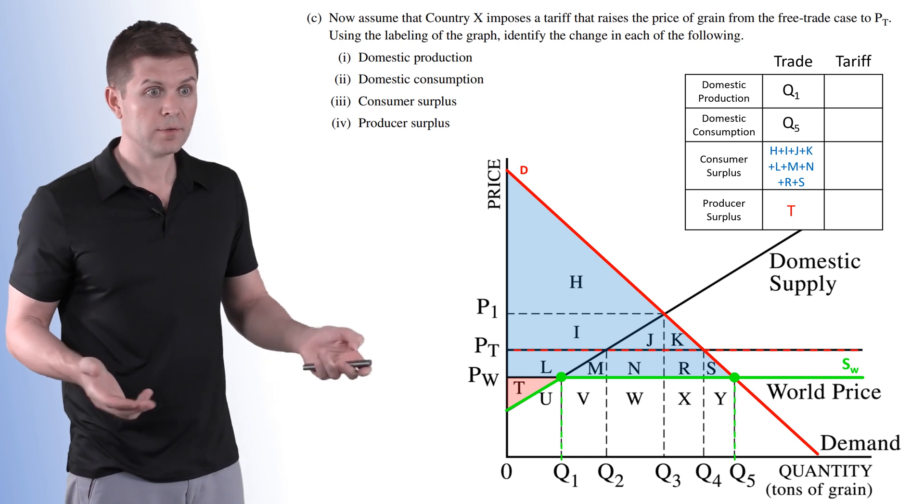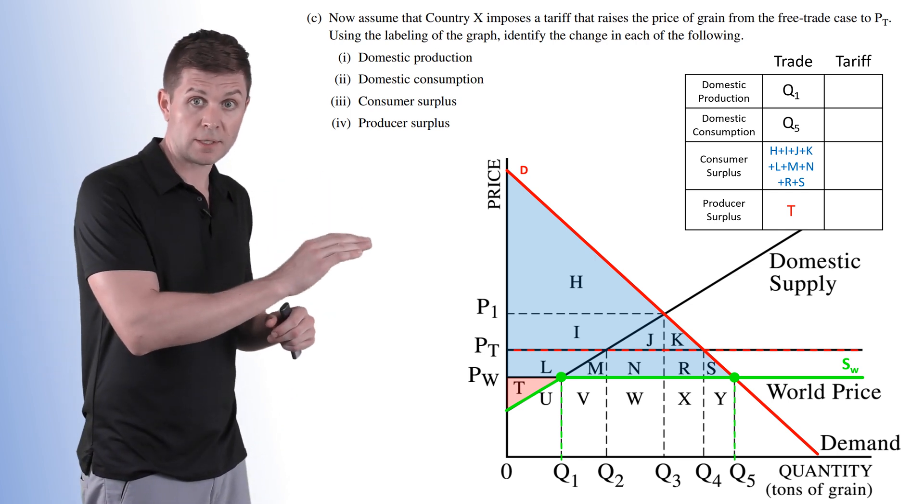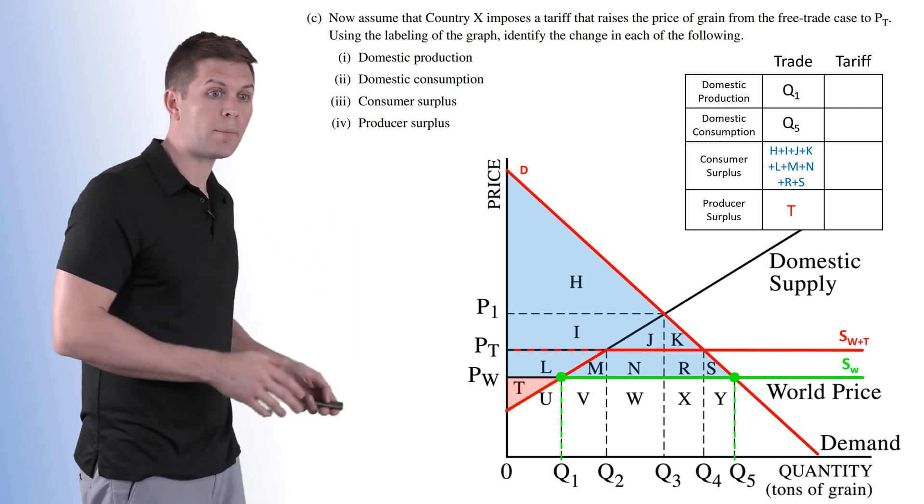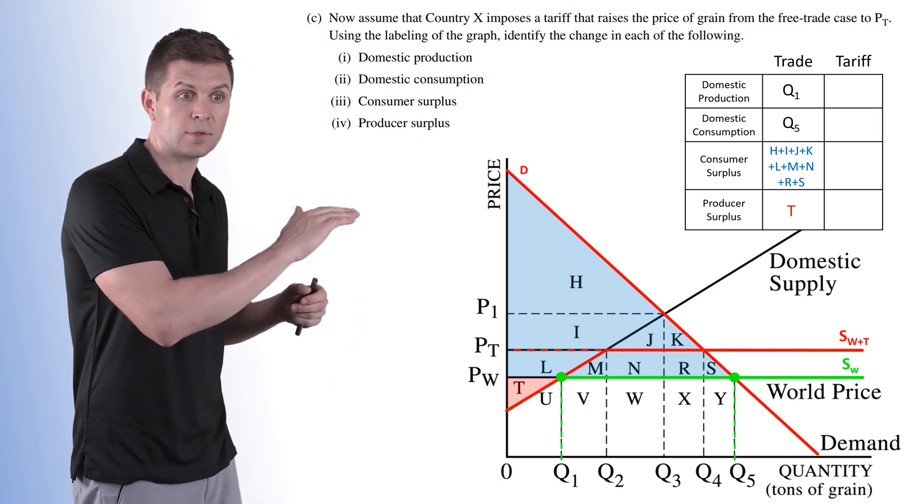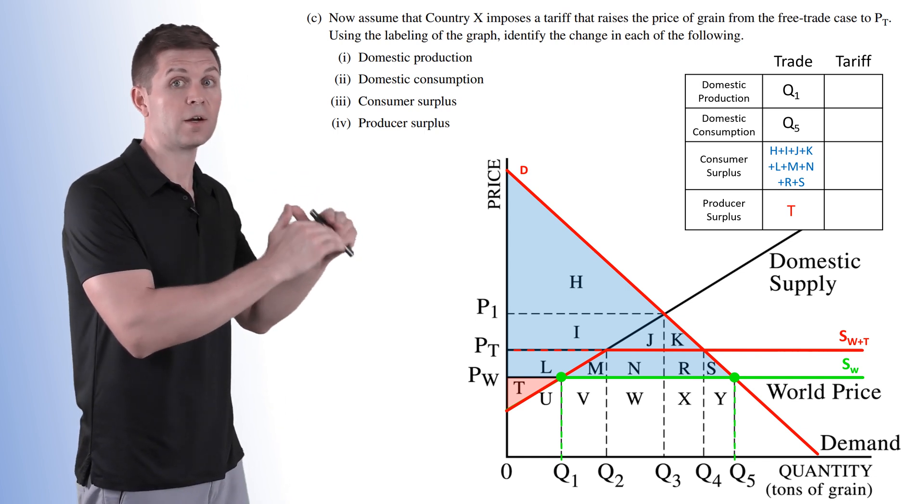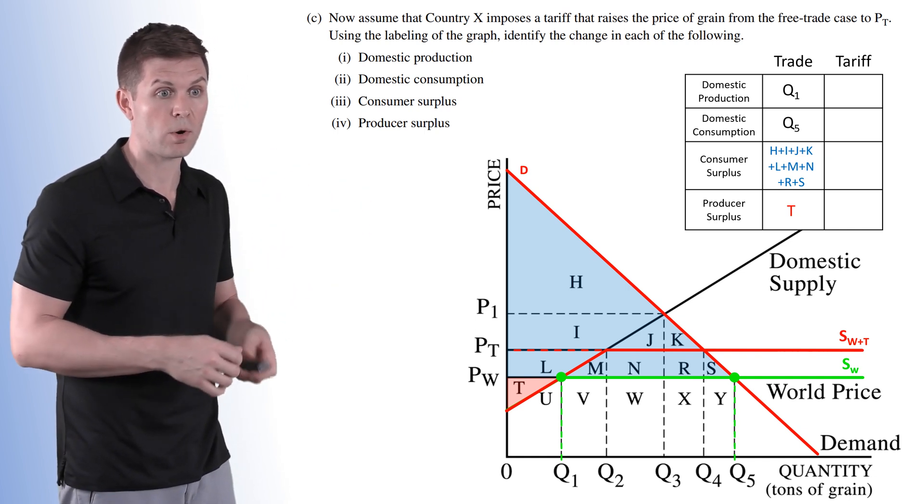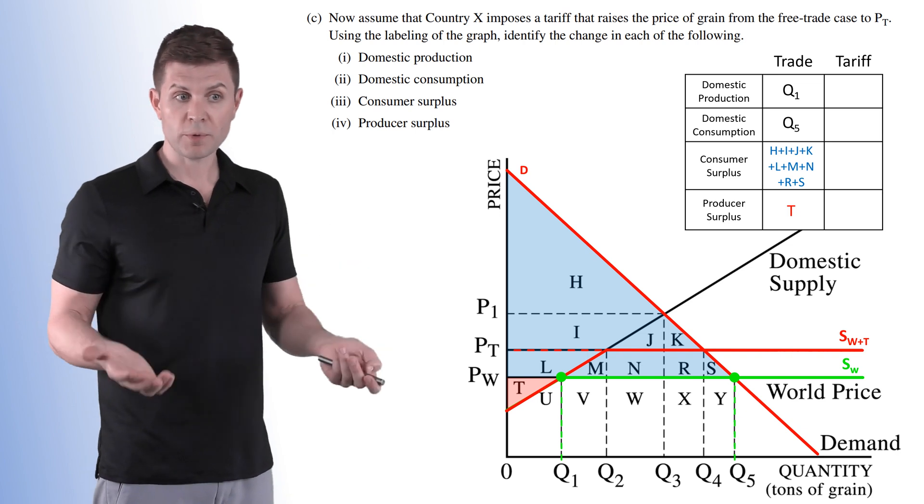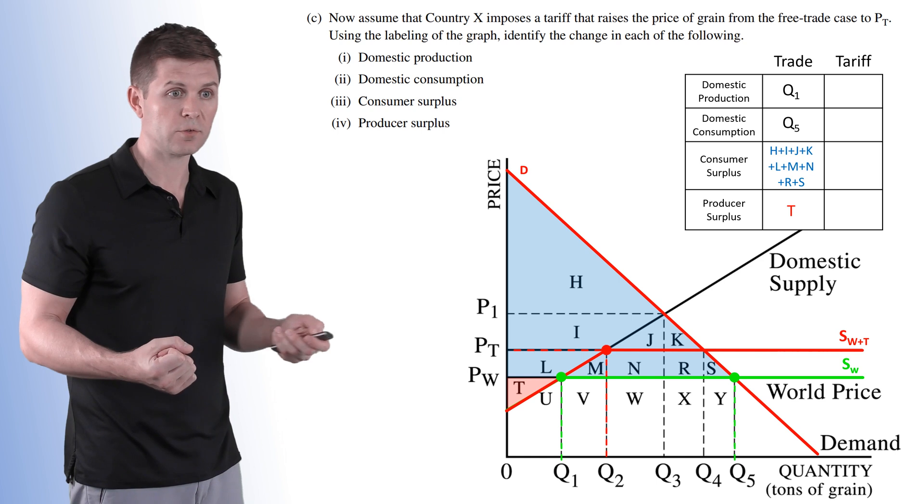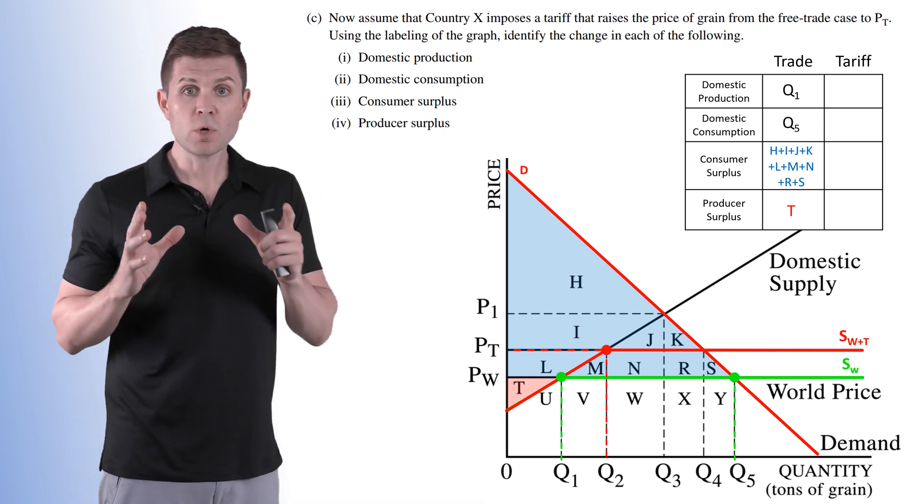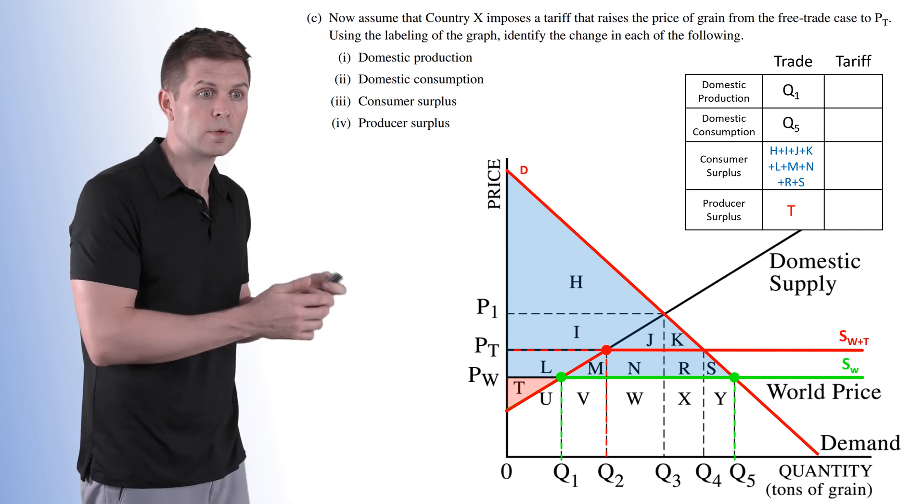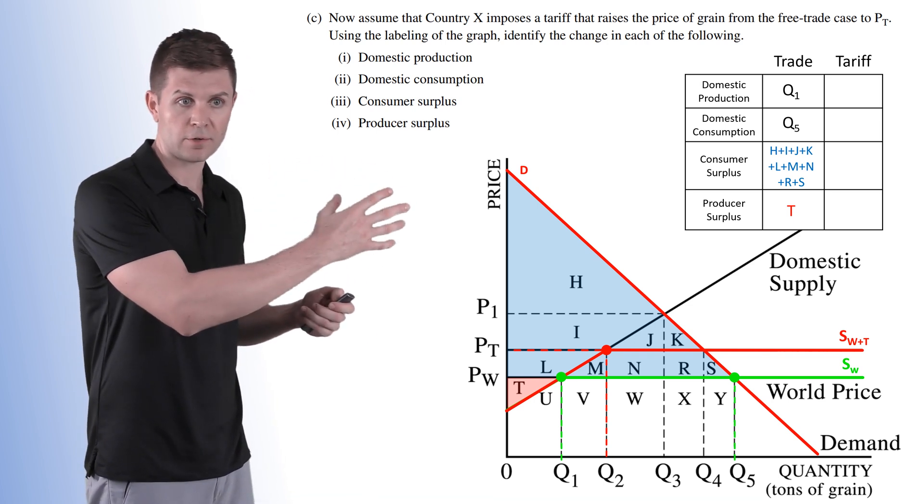Now we're going to add the tariff in. The tariff is at PT, price with the tariff, and because price goes up our supply curve extends, domestic production increases, and the world price with the tariff is higher than what the world price was before. So we've increased domestic production and because price is higher we're going to reduce the quantity demanded as well.